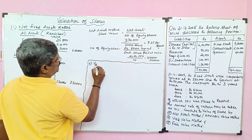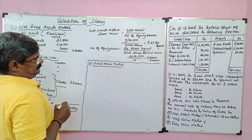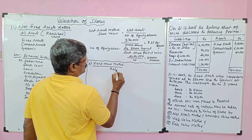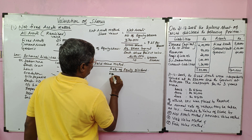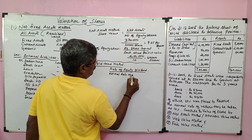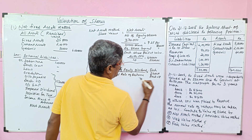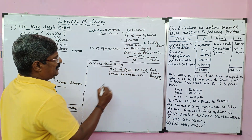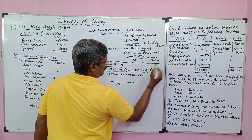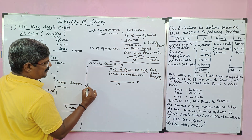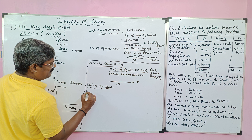The second method is the yield value method. We use profit to find the share value. The formula is: rate of equity dividend divided by normal rate of return, multiplied by each share paid-up value. In this question, the rate of dividend is not given; the normal rate of return is 10% and each share paid-up value is rupees 10. So we have to first ascertain the rate of dividend.